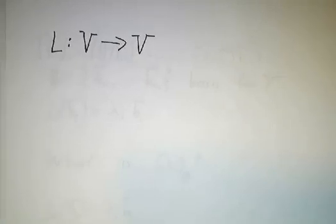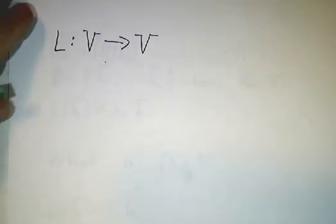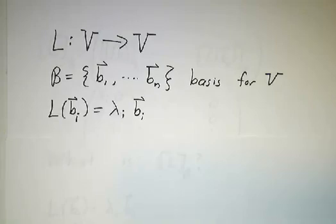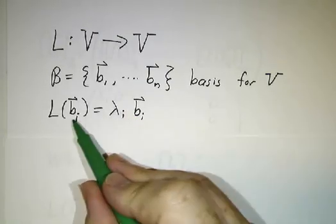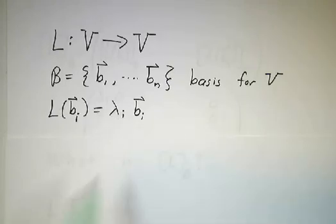I'm gonna do it in the case of a linear operator, and then we're gonna switch back to matrices. So let's suppose we have a linear operator, and let's suppose we have a basis, and let's suppose that every single basis vector is an eigenvector. So L applied to any basis vector gives you a multiple of that basis vector.